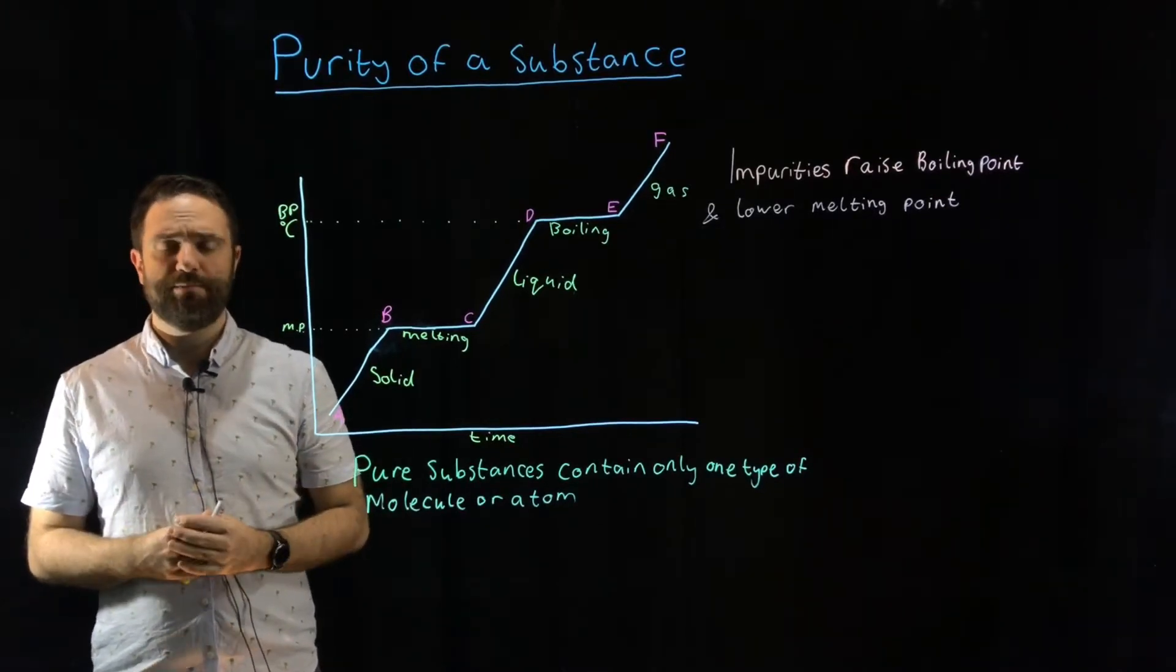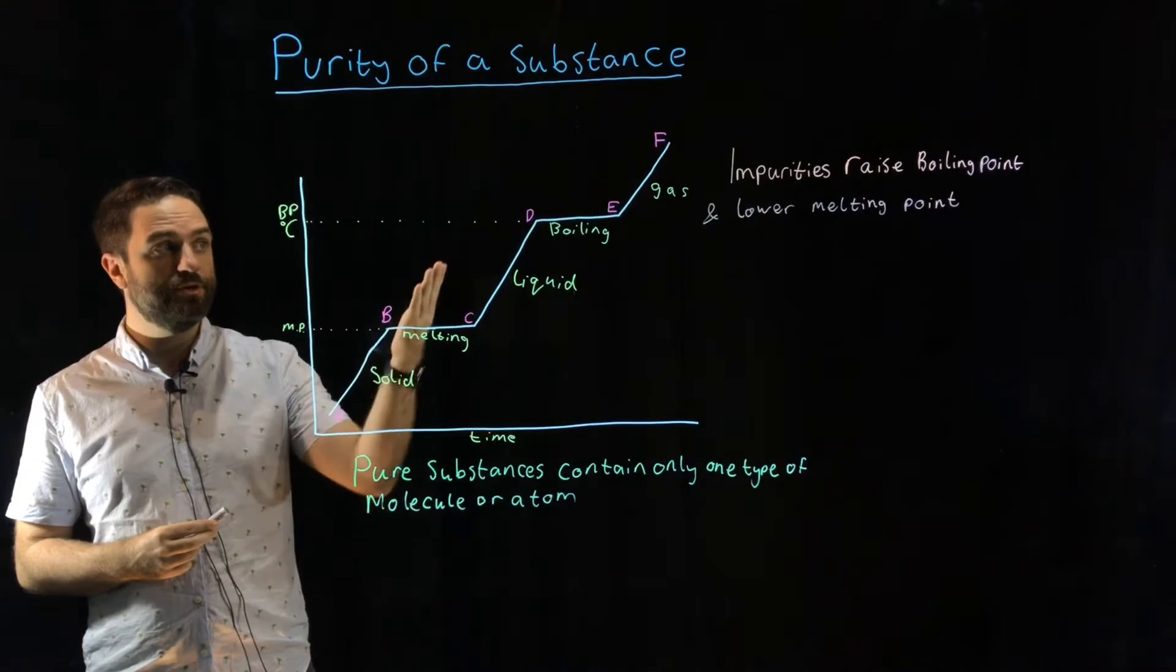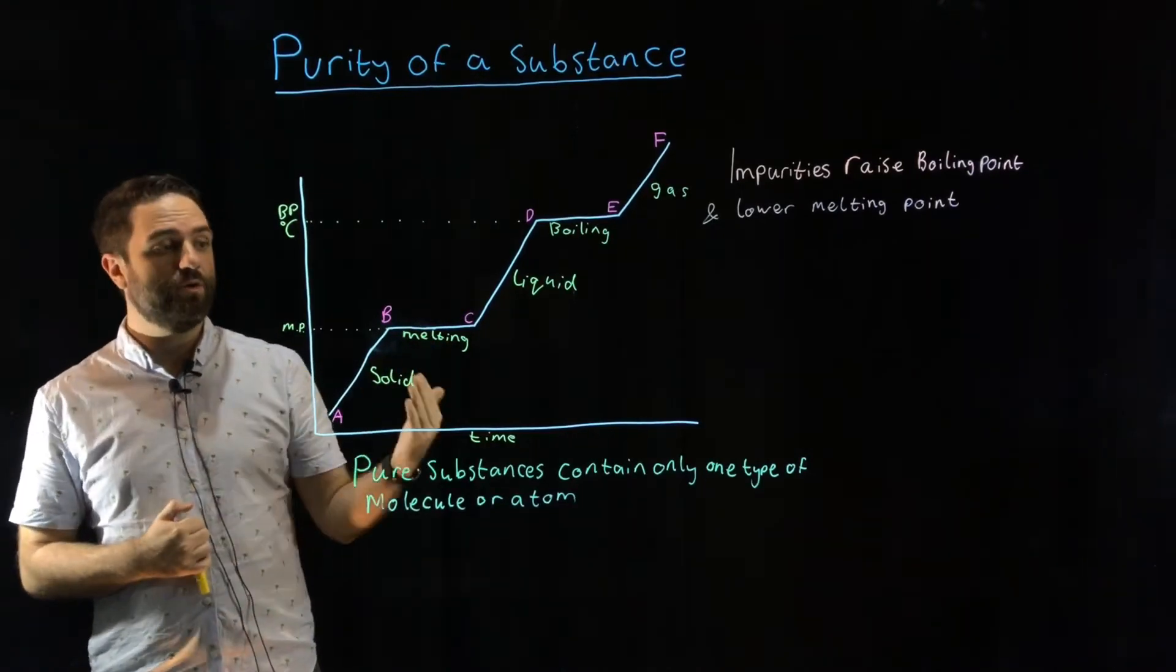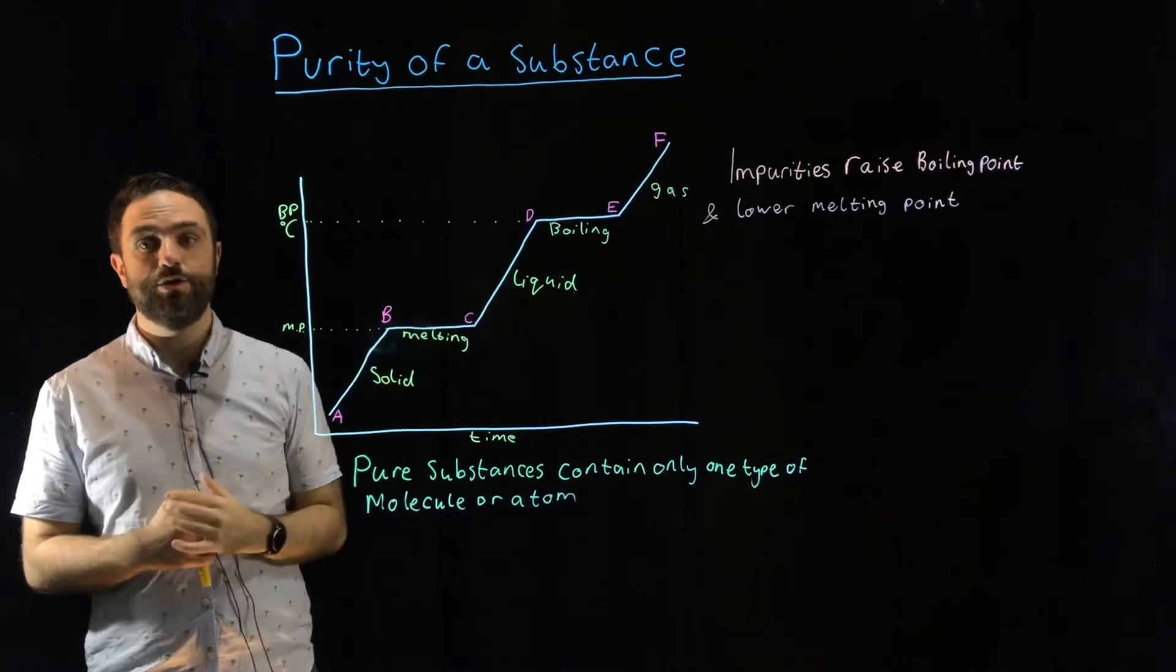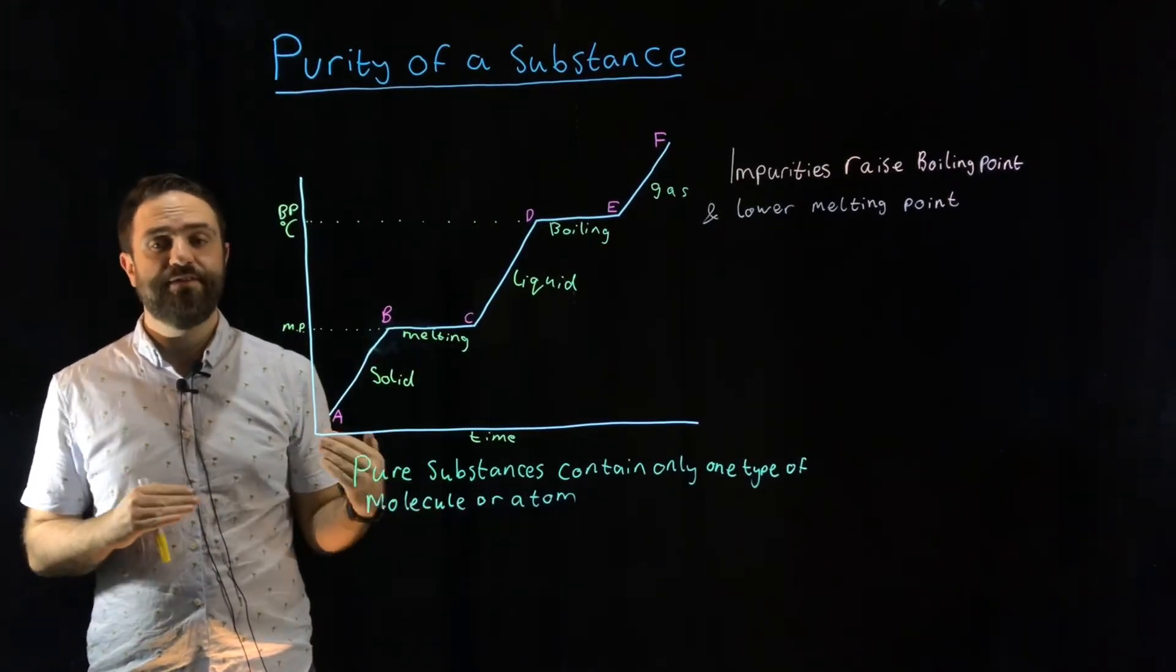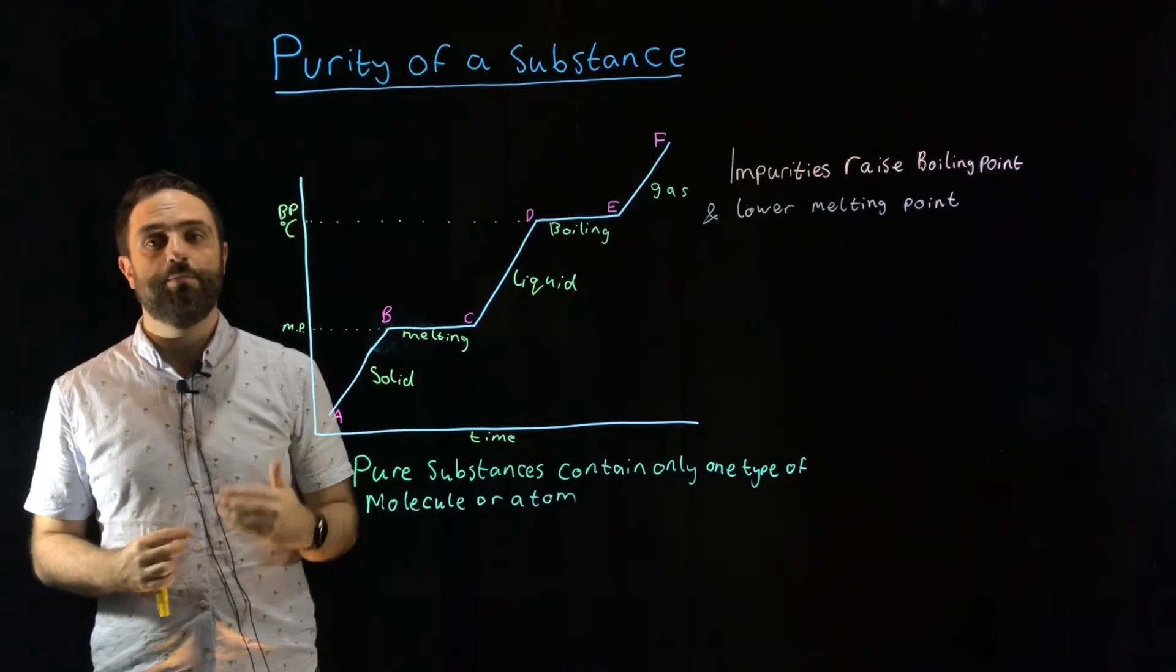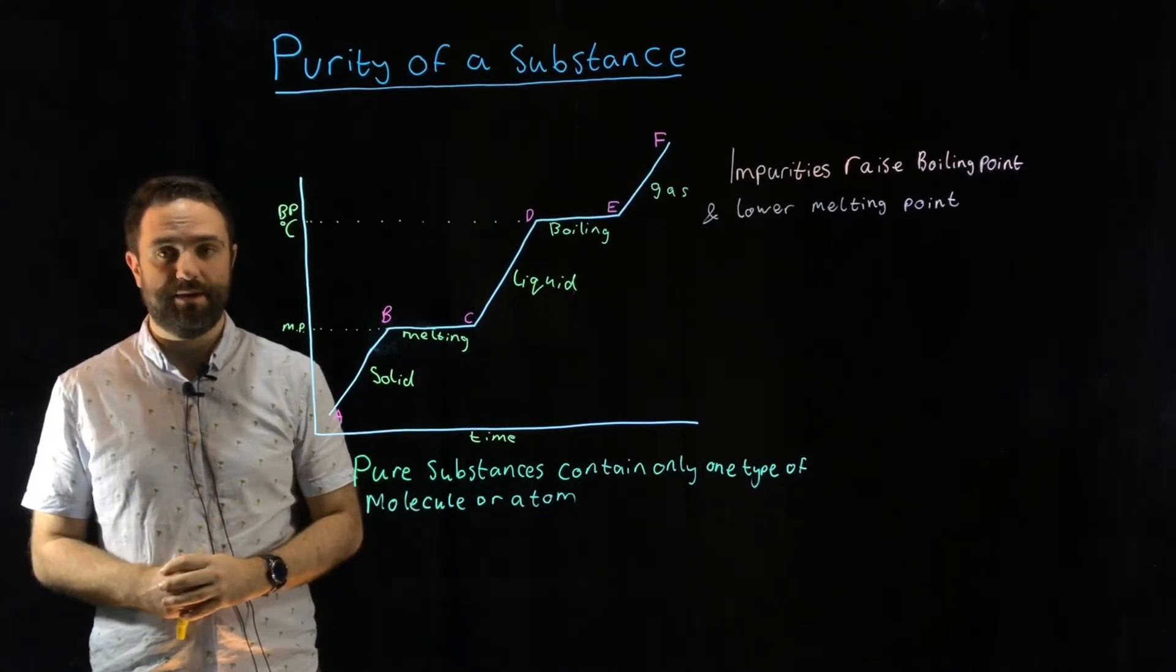If you don't know the boiling and melting point of a substance, you can use this to determine it. And also, if these are not nice lines, if it's more of a curve, you know that you have impurities because the different substances in the mixture will boil and melt at different temperatures.